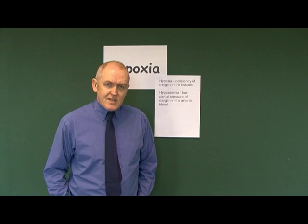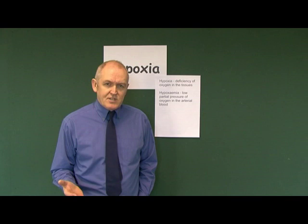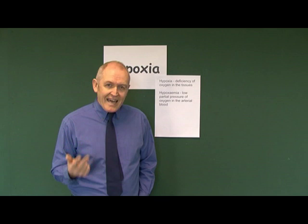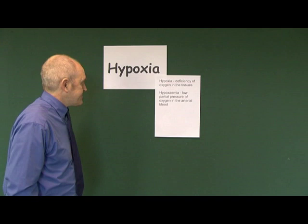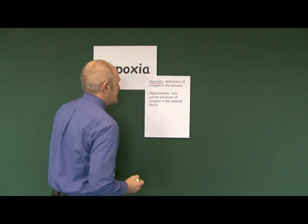People sometimes use the term anoxia as well. Anoxia means the complete absence of oxygen. So to summarize those terms: hypoxia is deficiency of oxygen in the tissues and cells; hypoxemia is low partial pressures of oxygen in the arterial blood.